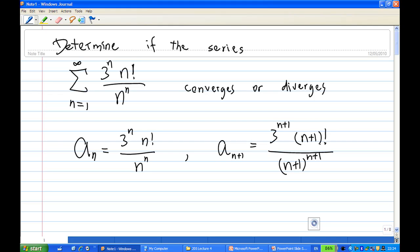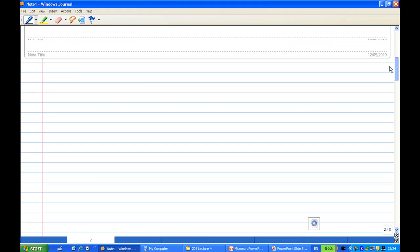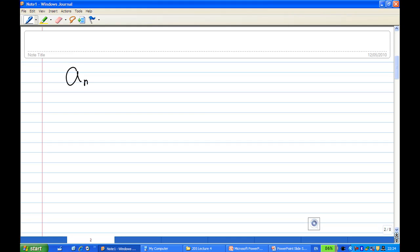When you change n to n plus 1, then we're going to take a ratio. So let's take the ratio a n plus 1 over a n. This is equal to 3 power n plus 1 times n plus 1 factorial over n plus 1 power n plus 1, divided by a n, which is 1 over 3 power n times n factorial over n power n.